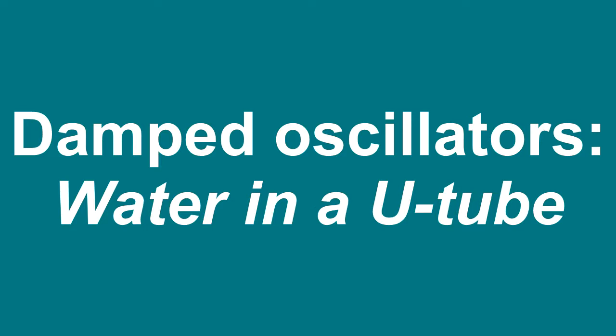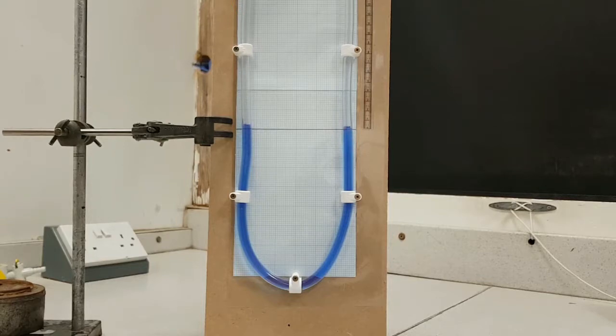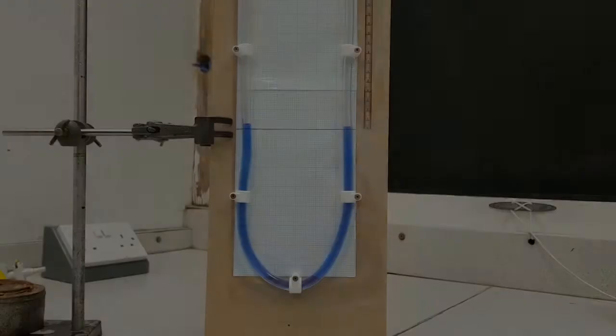We can model the behavior of a damped oscillator by looking at how water displaced in a U-tube oscillates over time. We can see that the amplitude of the water decays very quickly due to the friction between the water and the side of the tube.